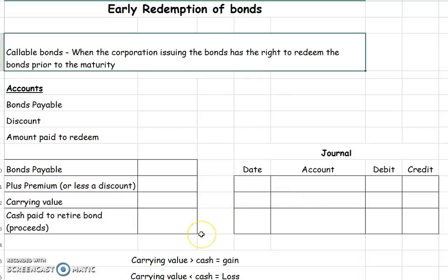In the previous videos, what we've done is we have redeemed our bonds on the maturity date. At that point, we repaid the amount we owe them and there was no gain or loss on early redemption of bonds.